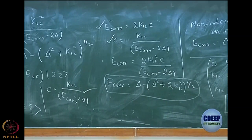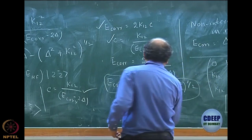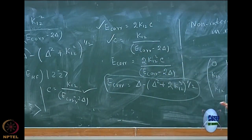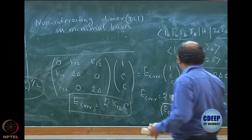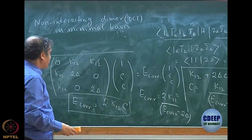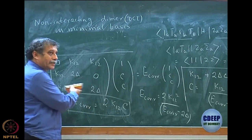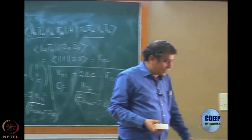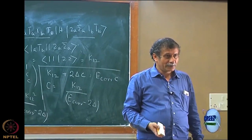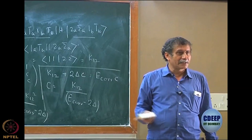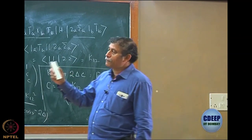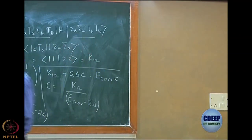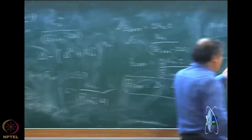That is the message: the DCI correlation energy is not size consistent. The problem has come because of the linear expansion, unless it is a full CI. In fact, this same problem I can now solve in full CI — for the monomer I take only doubles, and for the dimer I take up to quadruples. With doubles and quadruples, you will see identical results.